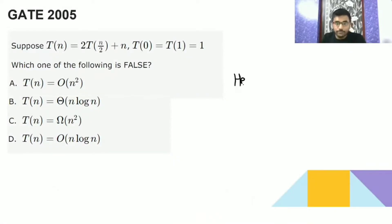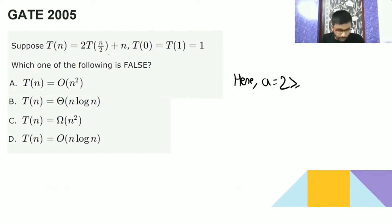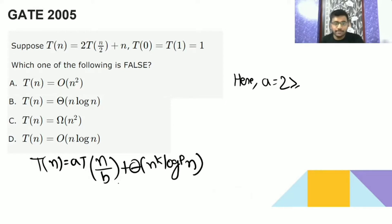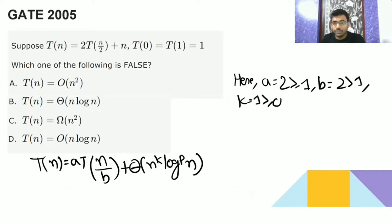Here you can assume A as 2, and B is equal to 2. So it is in the Master Theorem form, and you can apply the Master Theorem here. The form is T(n) = A·T(n/B) + Θ(n^k · log^p n). Here A is equal to 2, which is greater than or equal to 1; B is equal to 2, which is greater than 1; K is equal to 1, which is greater than or equal to 0; and P is equal to 0.